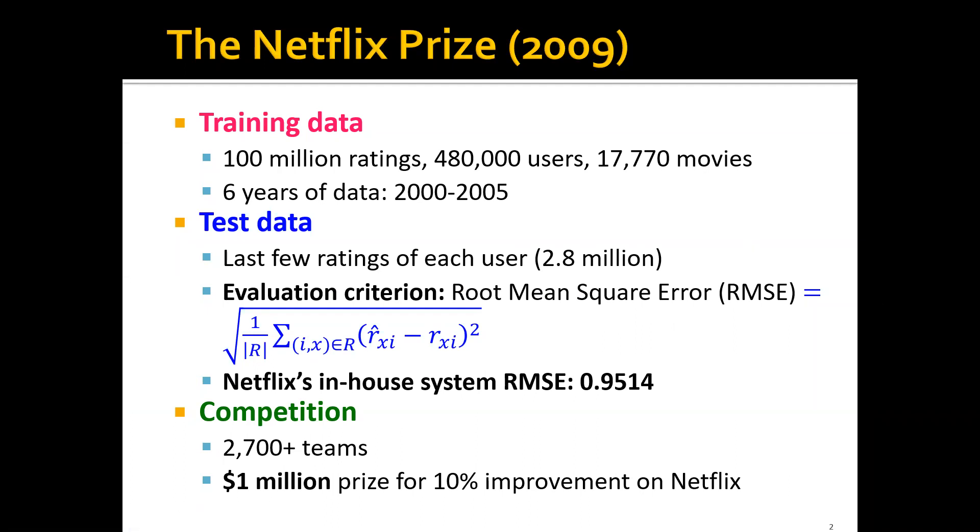Let's start with the famous Netflix Prize that happened around a decade ago. The Netflix Prize is a competition where we're given the training data of around 100 million ratings from 480,000 users and around 17,770 movies.